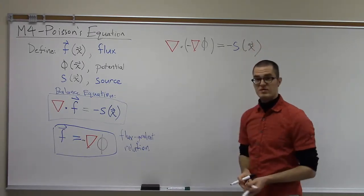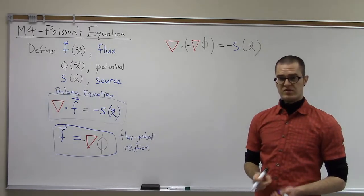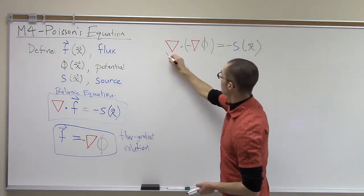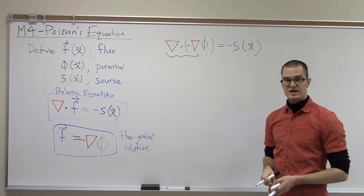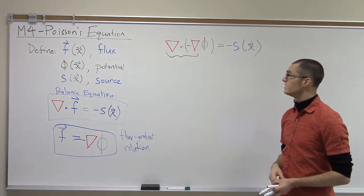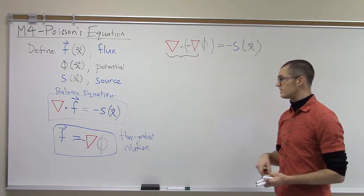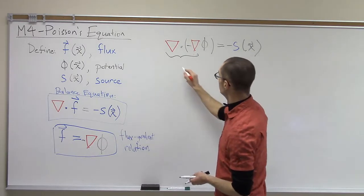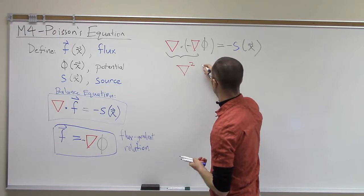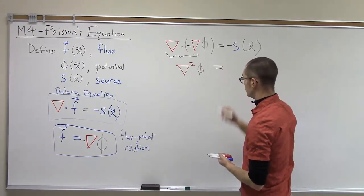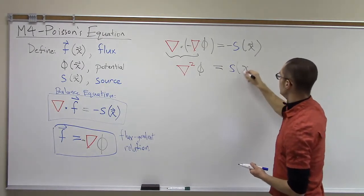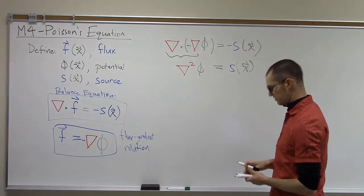If you think back to our video on the vector operator, in particular the last one referring to the Laplacian, this part right here — nabla dot nabla — if we factor the minus sign out, we can actually cancel out the minus sign from both sides of this equation. So nabla dot nabla is actually just equal to the Laplacian. So nabla squared phi is equal to the source term, which might in general be a function of x. Often the source term is just a constant.